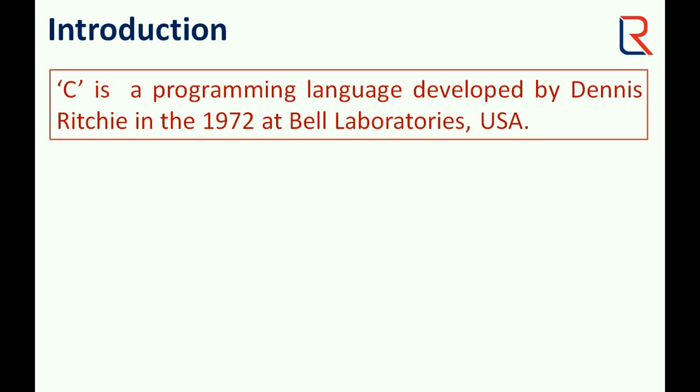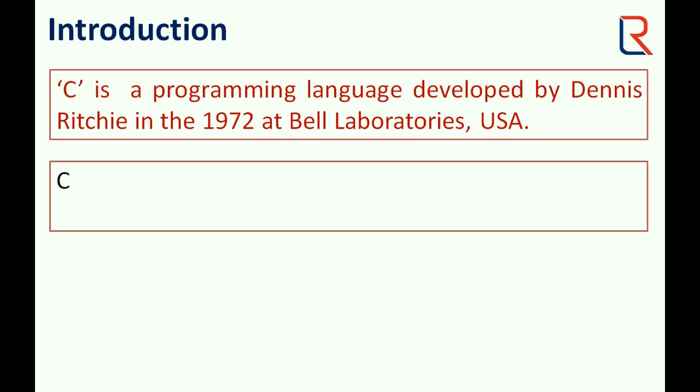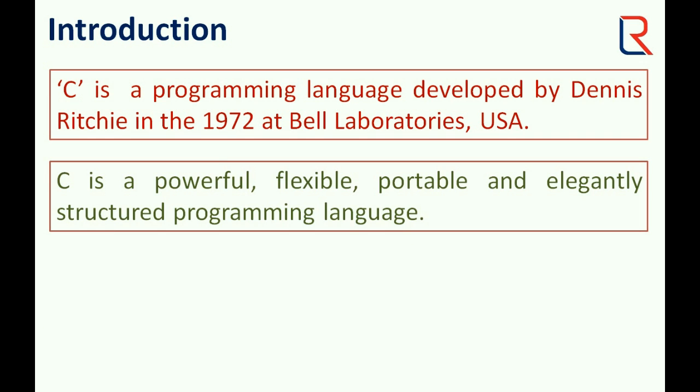Let's begin with introduction. C is a programming language developed by Dennis Ritchie in 1972 at Bell Laboratories USA. C is a powerful, flexible, portable, and elegantly structured programming language.